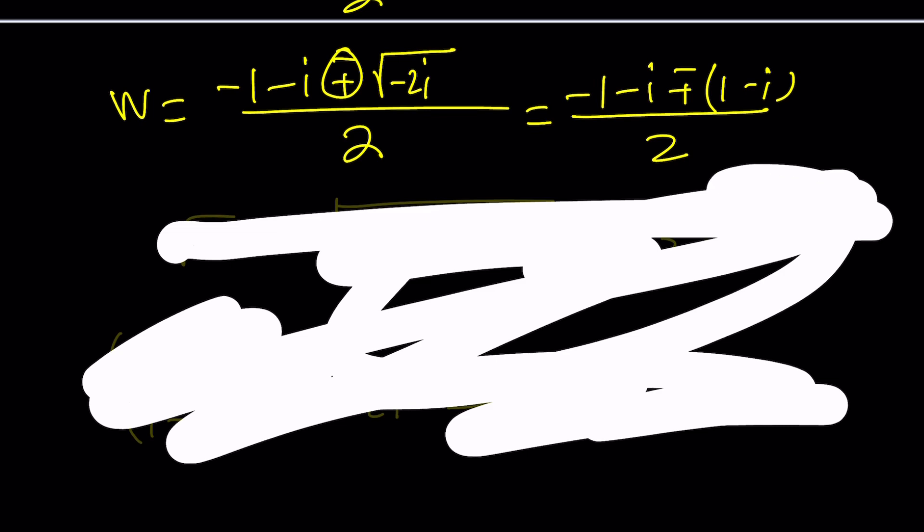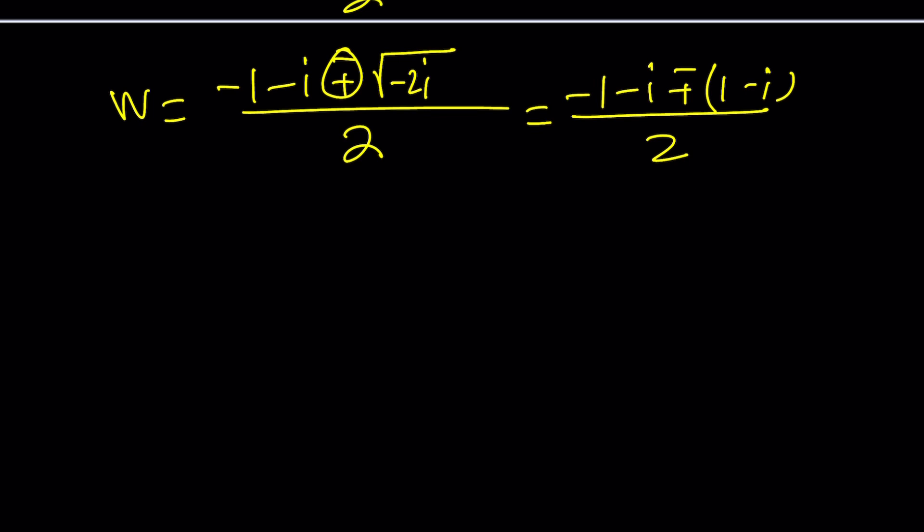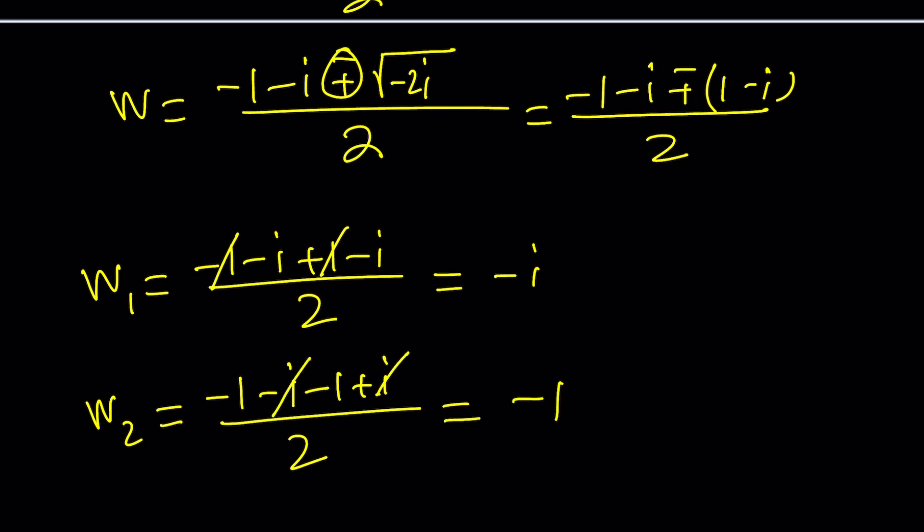Cool. Now, here's what we have. w1, negative 1 minus i plus 1 minus i divided by 2. Here, negative 1 and positive 1 cancels out and we end up with negative i. And w2 is going to be negative 1 minus i minus 1 plus i, if you negate it, divided by 2. Here, the i cancels out and we end up with negative 1. So there are two values of w, which makes sense.